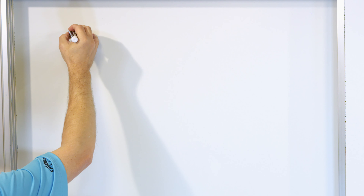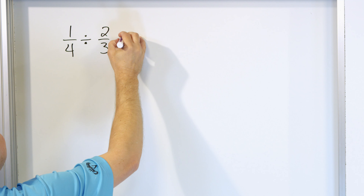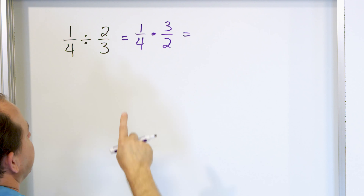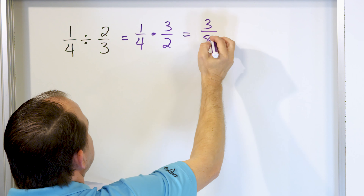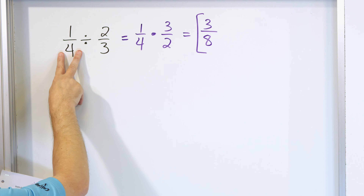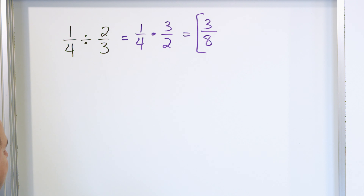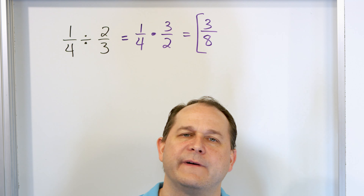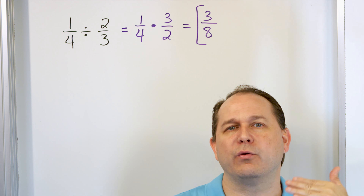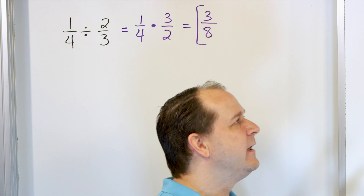Next, we're going to take 1/4 and divide it by 2/3. The 1/4 stays the same, division becomes multiplication, and 2/3 becomes 3 over 2 when flipped. Multiply: 1 times 3 is 3, and 4 times 2 is 8. The answer is 3/8. This is an example of fraction division where it doesn't go a whole number of times. If you ever get a fractional answer when dividing fractions, it means what you divided into cannot go a whole number of times.